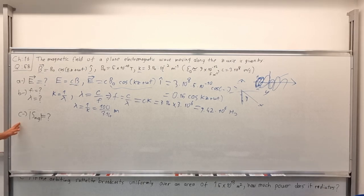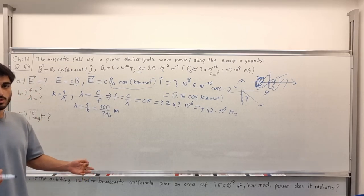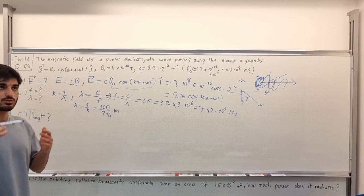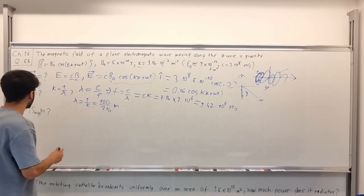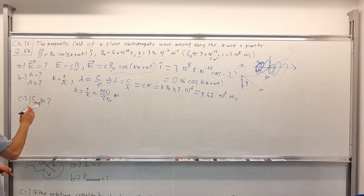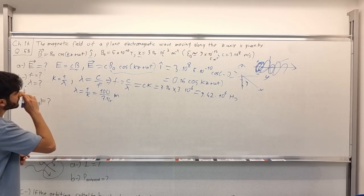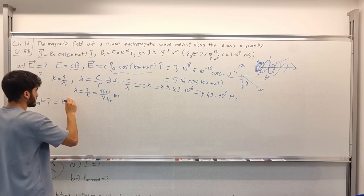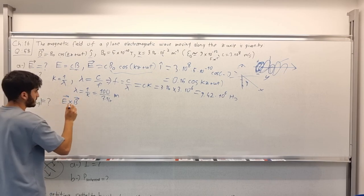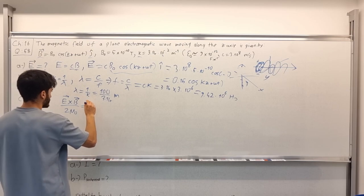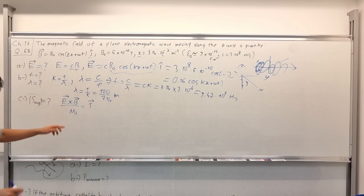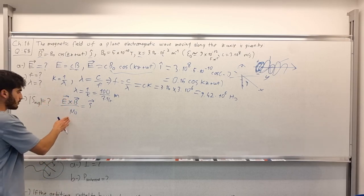For part c, we are asked for the average of the Poynting vector. The Poynting vector represents the energy carried per unit area per unit time — its units are watts per meter squared. The formula is S⃗ = (E⃗ × B⃗) / μ₀.